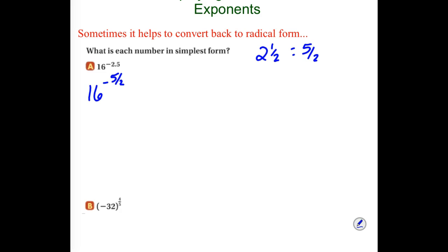What does a 5 halves power mean? The bottom number is the root — we're taking a square root and then we're raising it to a 5th power. The negative is going to cause it to flip. So let's deal with the negative first: flipping this over is going to put the 16 in the denominator. The 2 in the bottom of my fraction means a square root, and then we also have to raise it to a 5th power because of that 5 in the numerator.